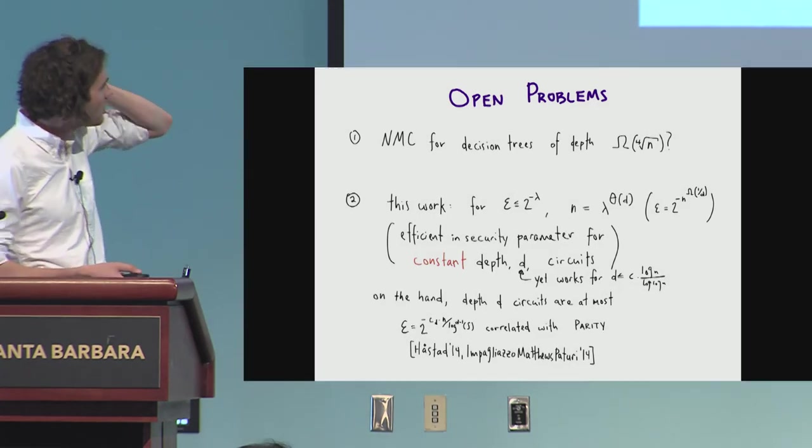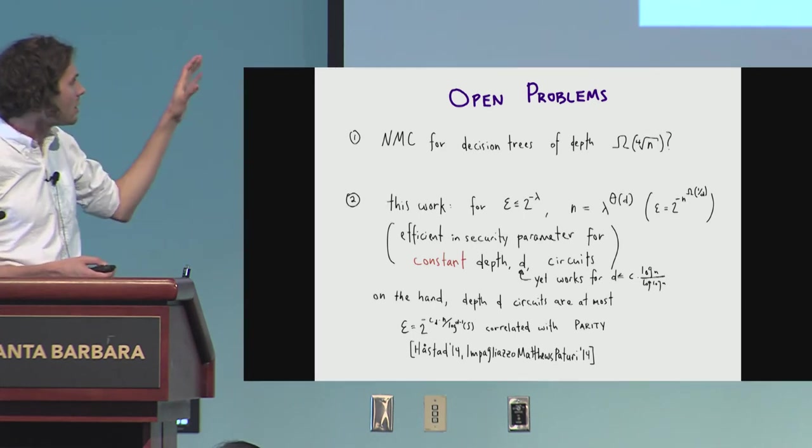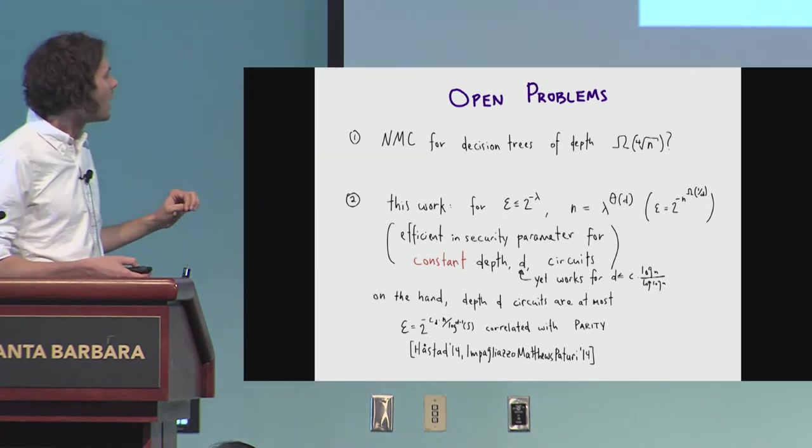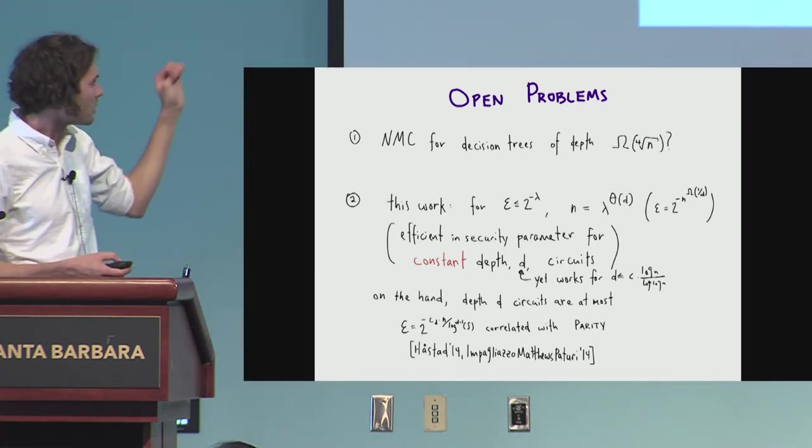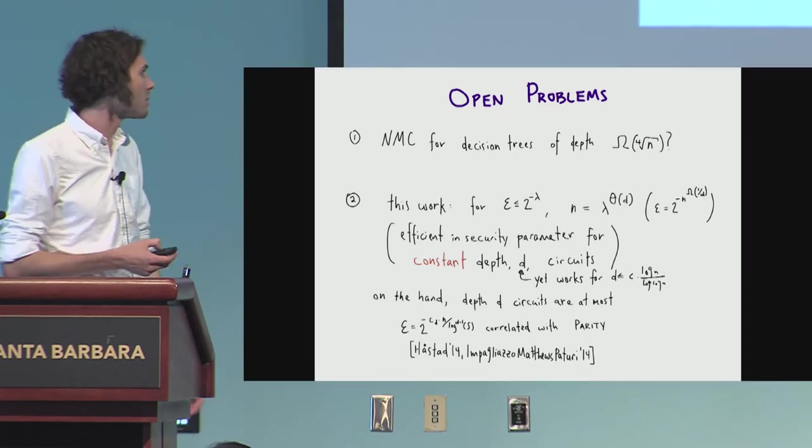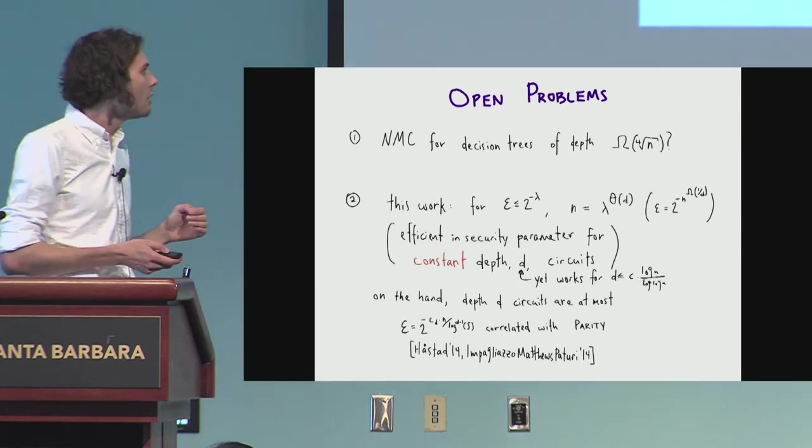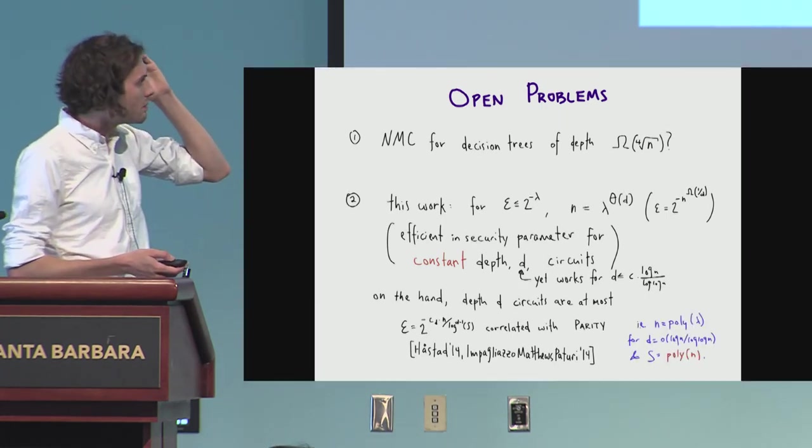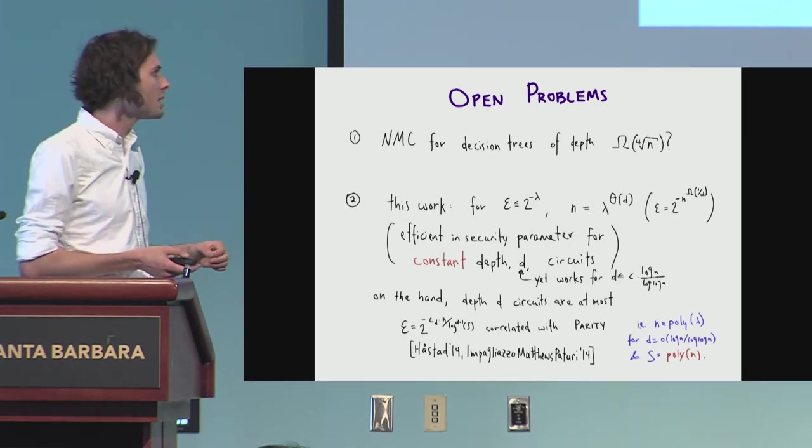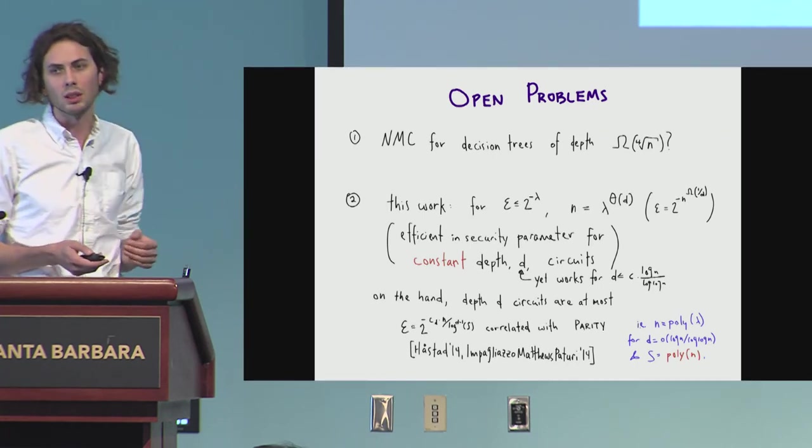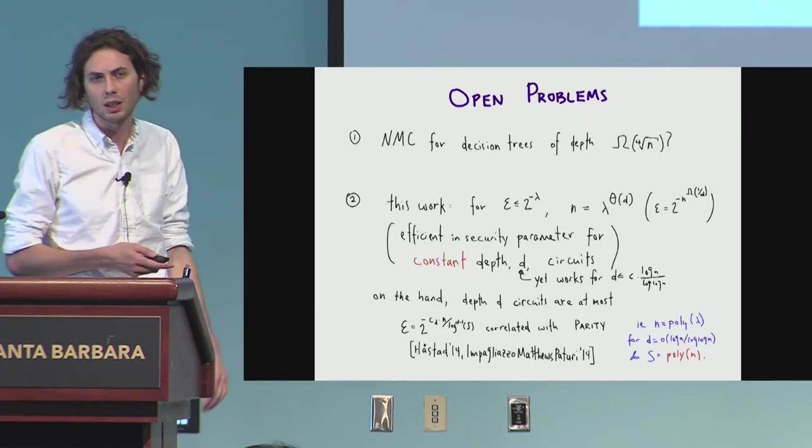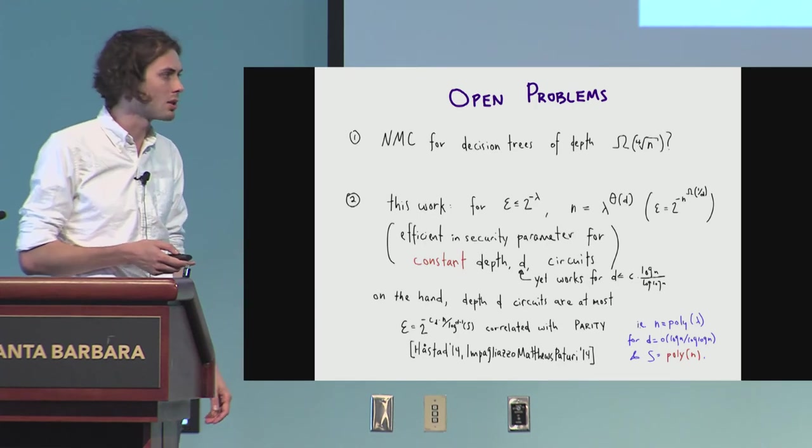The strongest result that's known is that the strongest average case lower bound for small-depth circuits is that epsilon is at most 2 to the n over poly log in d of s, which is the circuit size. It's at most correlated with parity, which is, for small circuits, if you have a poly-sized circuit, then this means that for much higher depth, it seems intuitive that you should be, it should be possible to get much better dependence on the security parameter.